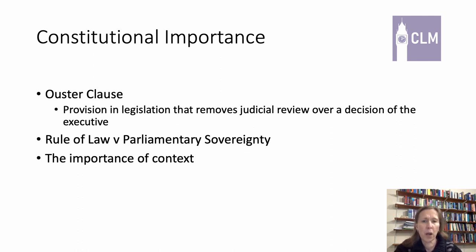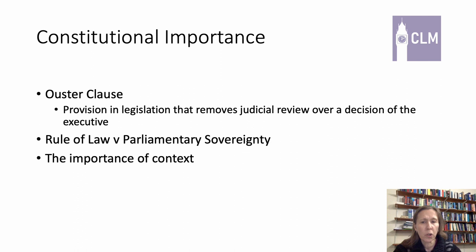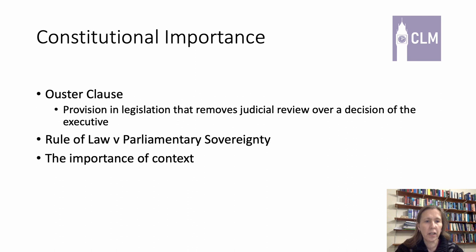But if you look at it from the viewpoint of parliamentary sovereignty, parliamentary sovereignty is all about seeing legislation as the highest form of law in the land and upholding the will of parliament, which in turn upholds the will of the electorate. If parliament has said in very clear legislation that judicial review is meant to be removed and the courts say they're not going to uphold that clause, then that will undermine parliamentary sovereignty — the rule of law will be undermining democratic will. As with all things in the UK constitution, context is key, so we have to think carefully about what type of ouster clause is in play, because different ouster clauses might be justified in different situations.